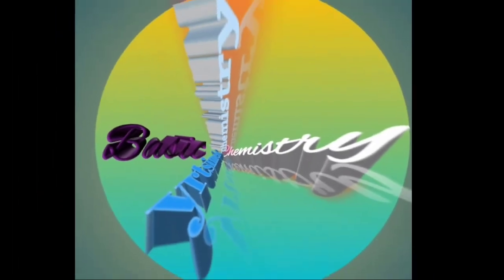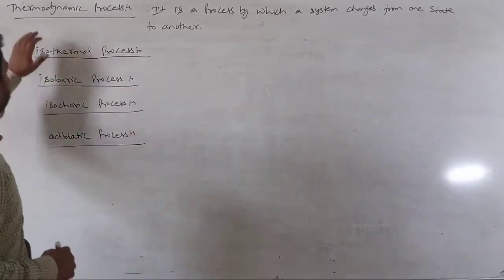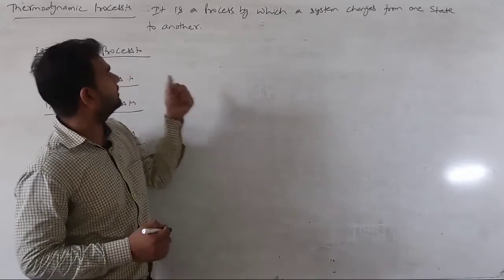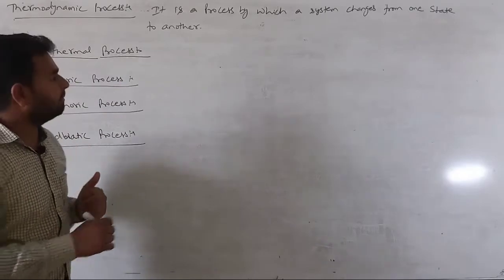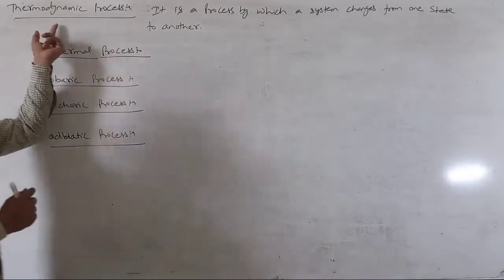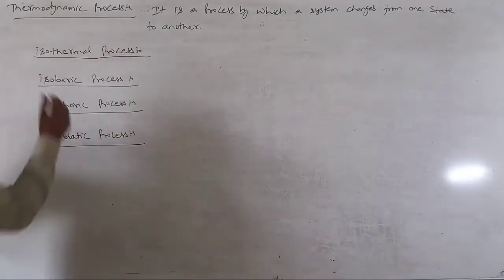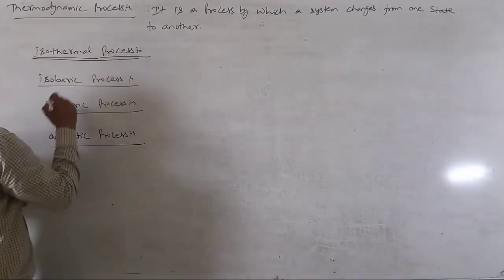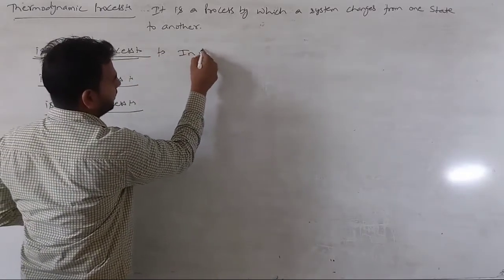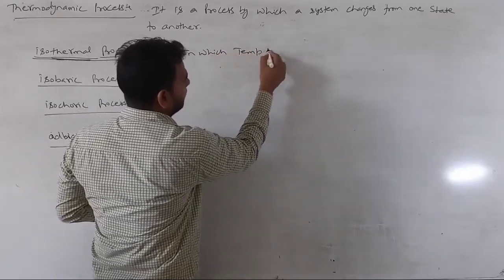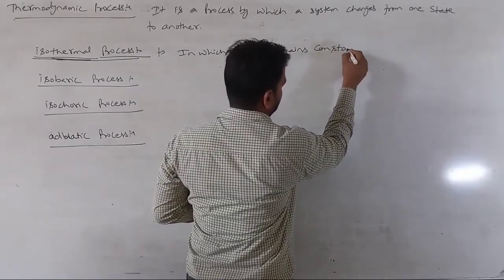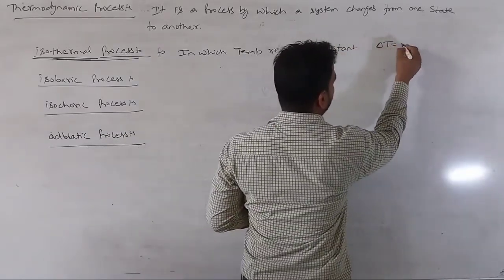We have thermodynamic processes — a process by which a system changes from one state to another. The first type is the isothermal process. 'Iso' means same, 'thermal' means temperature, so it is the process in which temperature remains constant, that is, ΔT equals zero.